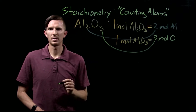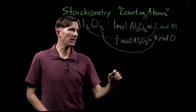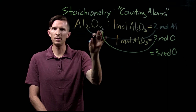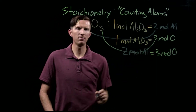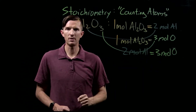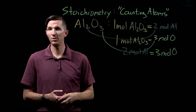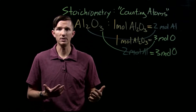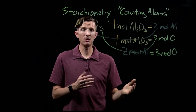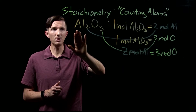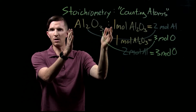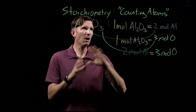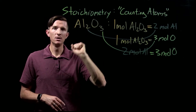We can also say that in one mole of Al₂O₃ we have three moles of oxygen, or that we have three moles of oxygen for every two moles of aluminum. We're comparing those two elements within the compound, and everything comes from the subscripts. We can use these same relationships whether we're counting atoms or counting moles, and they give us the ability to relate the amount of one element to another, or the total compound to one of its elements.